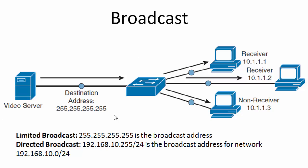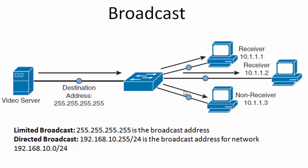There is another type of broadcast called directed broadcast. In directed broadcast, if you have a network 192.168.10.0/24, for example, the broadcast address of this network will be 192.168.10.255. So anyone who wants to broadcast to this network will use the destination address 192.168.10.255. In directed broadcast, this broadcast can be forwarded by the router. So if the sender is from a different network, the broadcast packet will be received by the router and the router will forward it to the destination network, if the IP directed broadcast feature is enabled on the router.